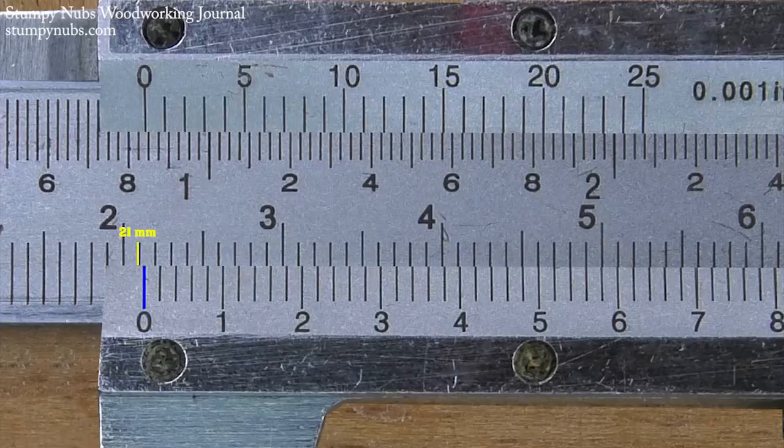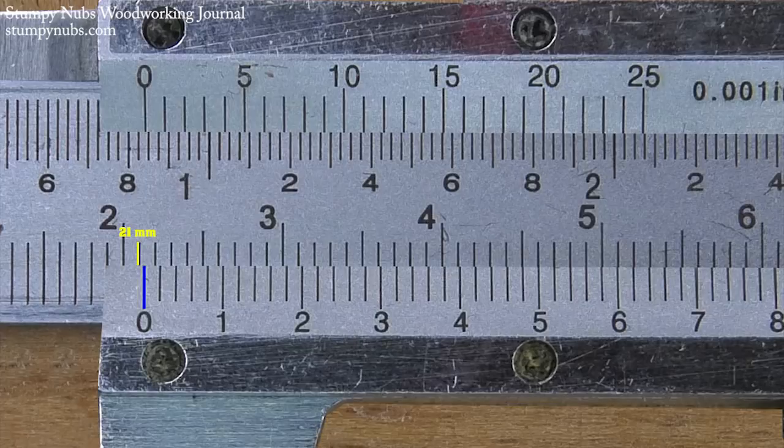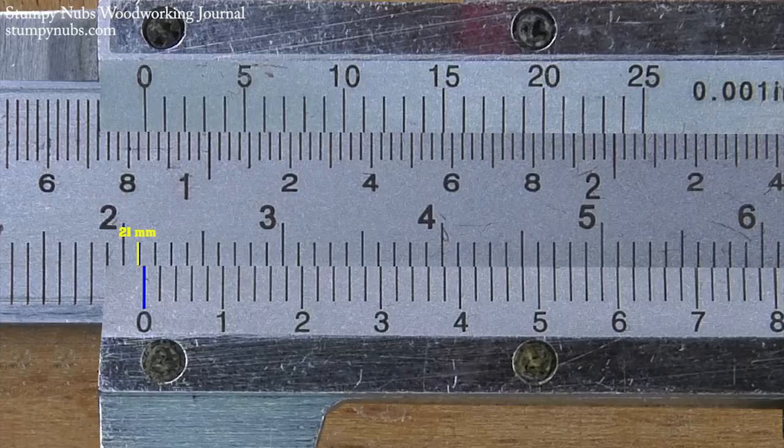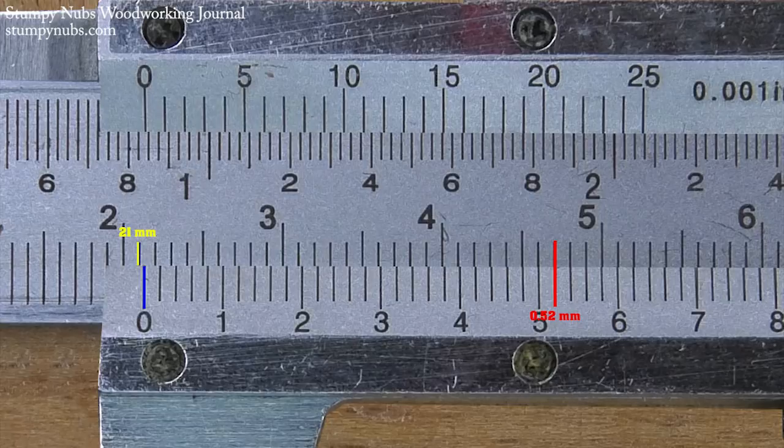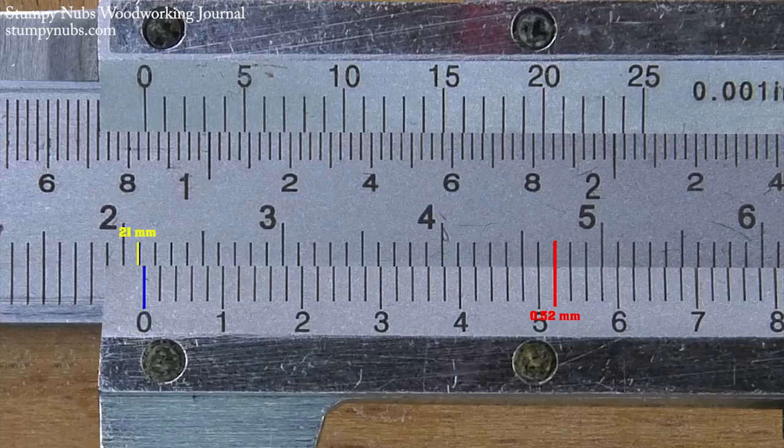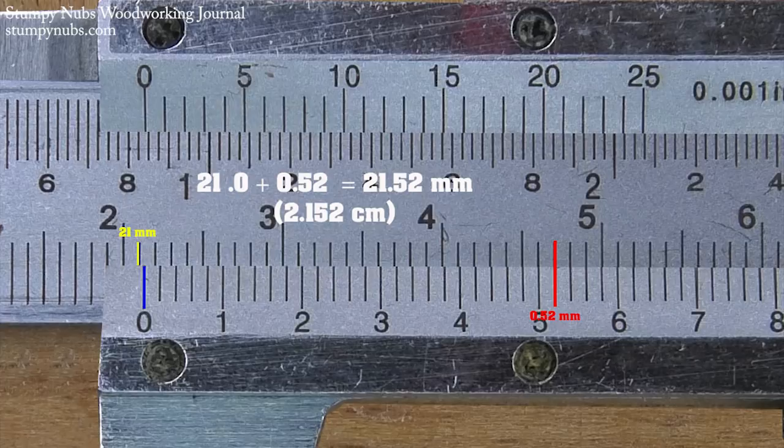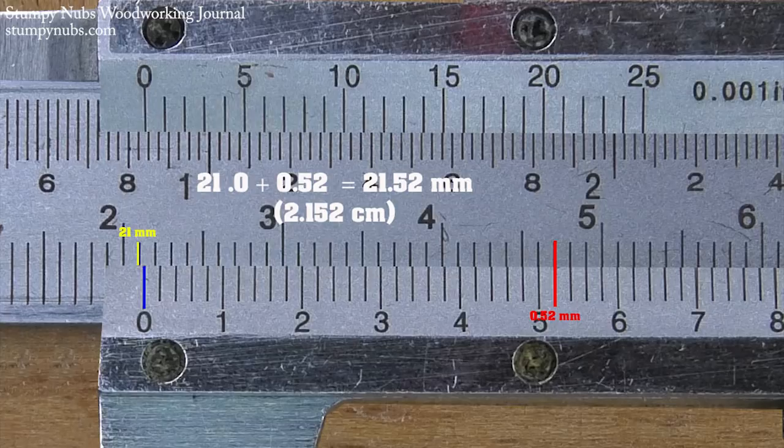Here the zero cursor falls just past the mark after the two. You can call that twenty one millimeters or two point one centimeters, but we want a finer measurement. The line on the Vernier scale that best aligns with the mark on the main scale is just past the five. That's fifty two hundredths of a millimeter or point five two. If I add point five two to the twenty one millimeters I got in the main scale, my final measurement is twenty one point five two millimeters or two point one five two centimeters.